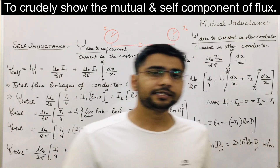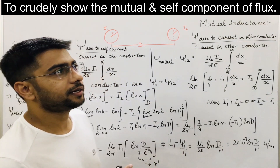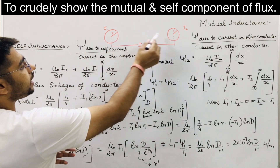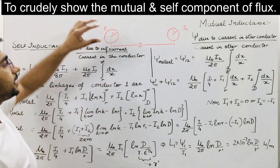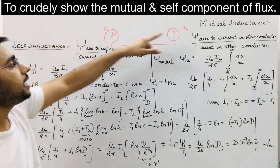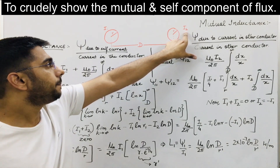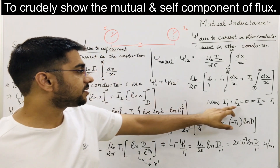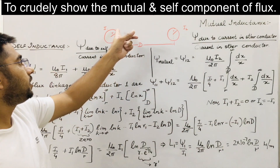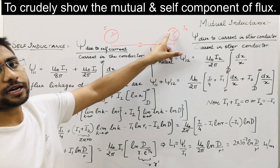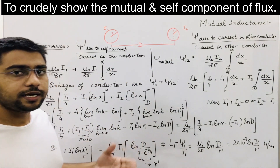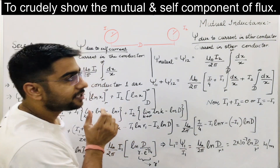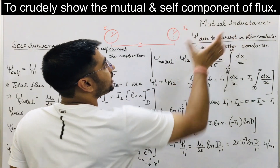Here we will consider a single-phase transmission line consisting of two conductors — current will go through one conductor and return through the other. Let us say this conductor carries current i1 and this carries current i2. Since it is a single-phase line, i1 plus i2 equals zero. Now we will see what part of the total inductance is the self inductance and what is the mutual inductance.